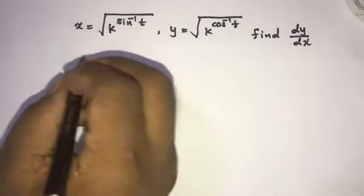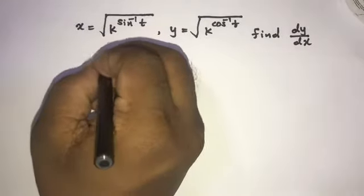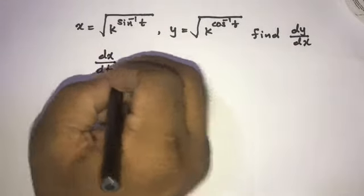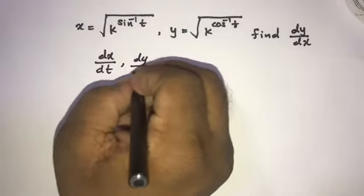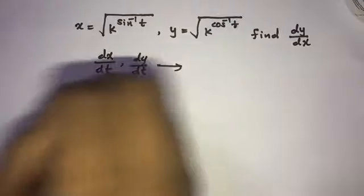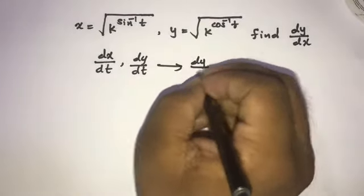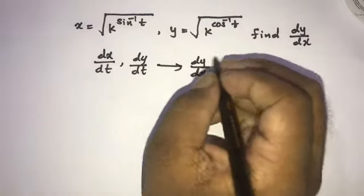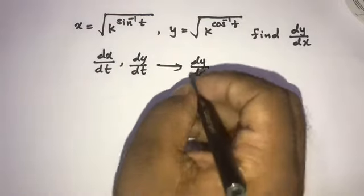Generally we solve this by finding dx over dt and dy over dt, then finding dy by dx. But in this question there is a short way.